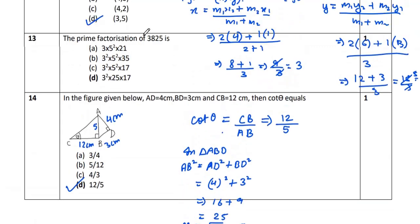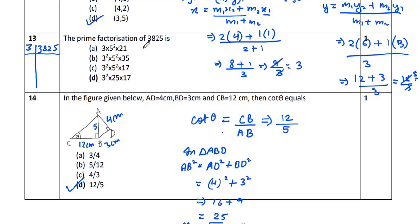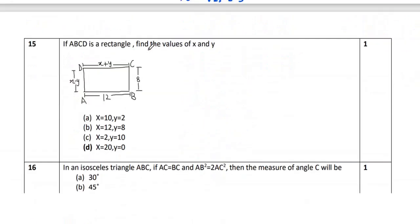I skipped question 13 — it asks for the prime factorization of 3825. You should divide 3825 by its prime factors (starting with 3). Express the answer in powers form. I'd like you to work this out and share your answer in the comment section!